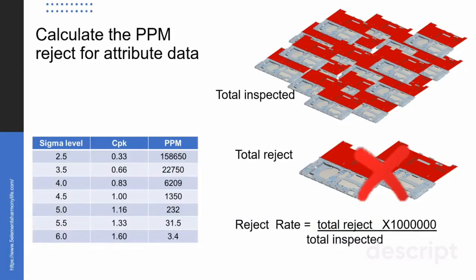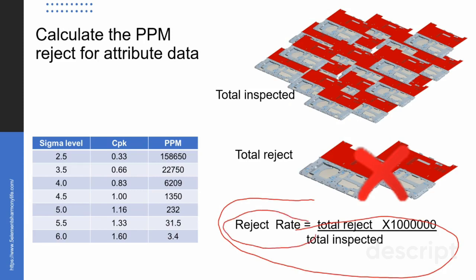In order to know the process capability value for attribute data, we will need to calculate the reject rate, such as from an inspection process. Once we have the reject rate, we can find the CPK value using statistical software or manually through a Z-table — we can then match the PPM with the potential CPK value.